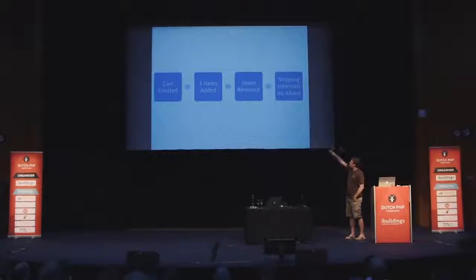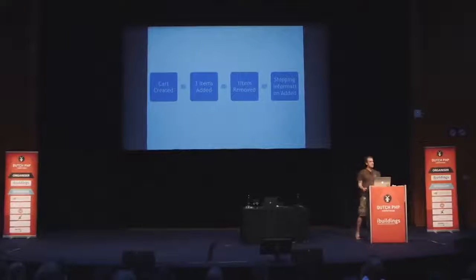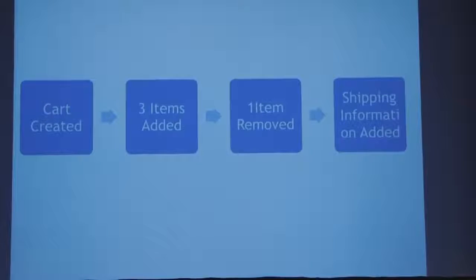We can do the exact same thing in an event source system. We might have: cart created, three items added, one item removed, shipping information added. Is this the same as: cart created, two items added, shipping information added? The answer is it depends — what perspective do you have on the data? If I look at this perspective, those two come out the same at the end. But what if I was instead counting how many times an item was removed? Then they would have very different answers.